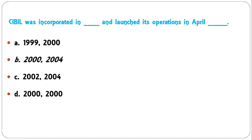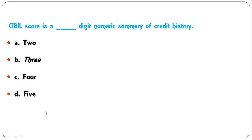CIBIL was incorporated in what year and launched operations in April of which year? It was incorporated in 2000 and launched operations in April 2004, so B is the correct answer.